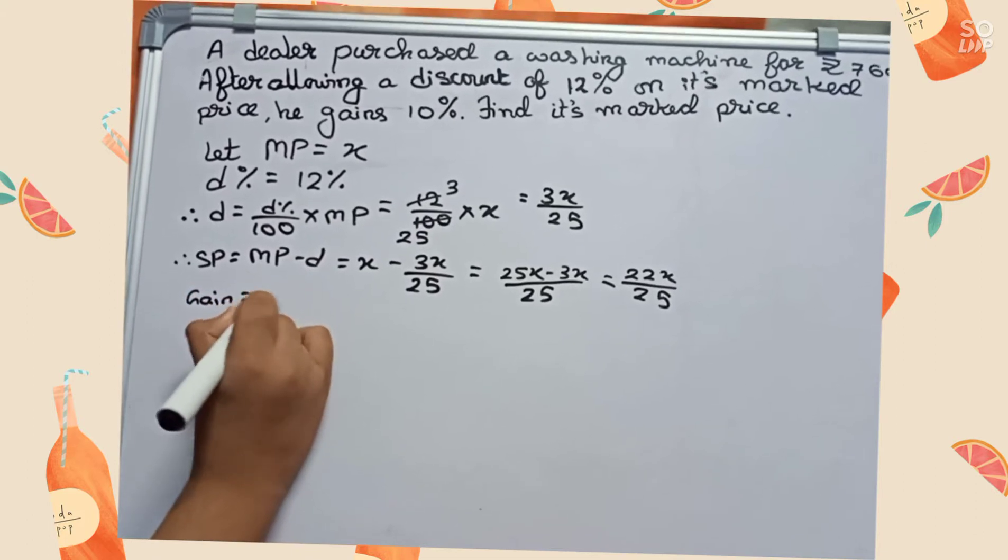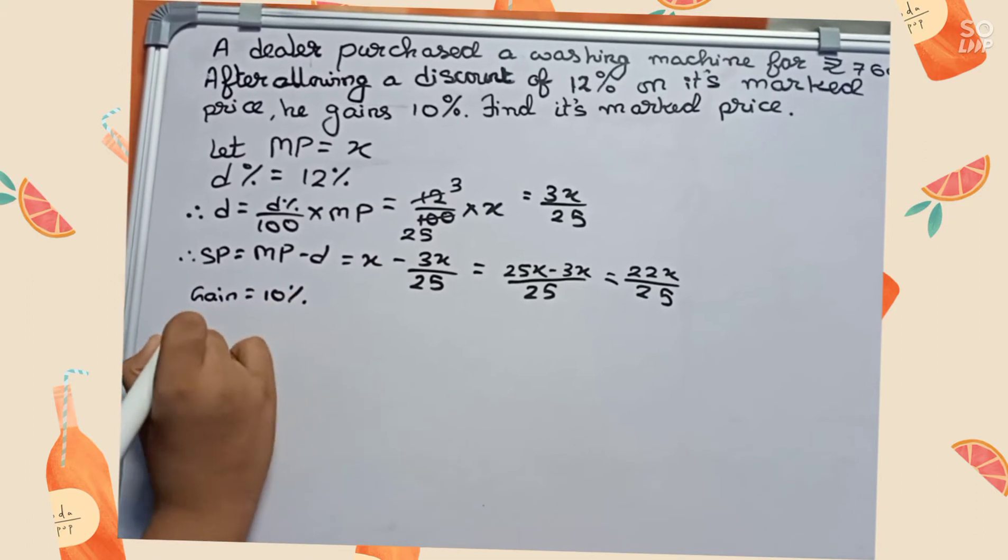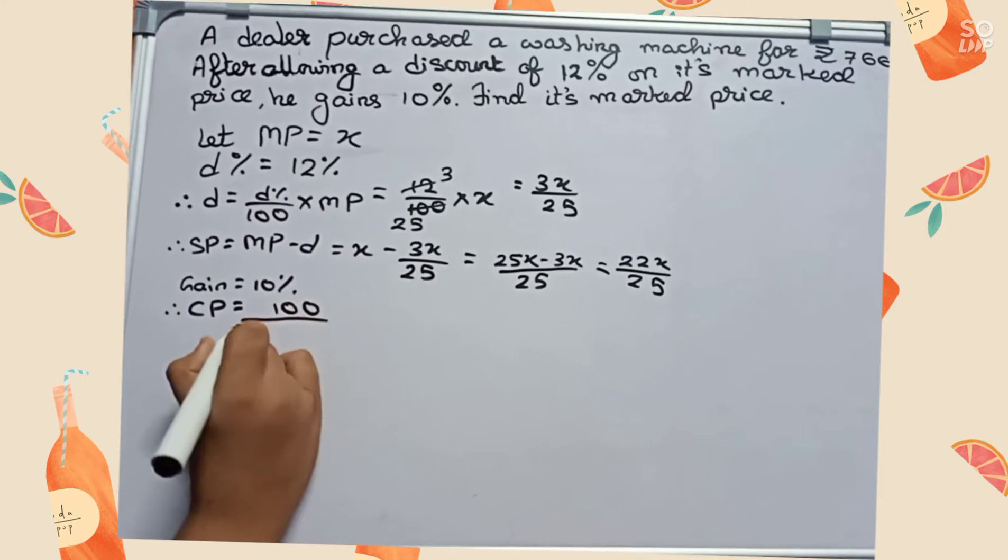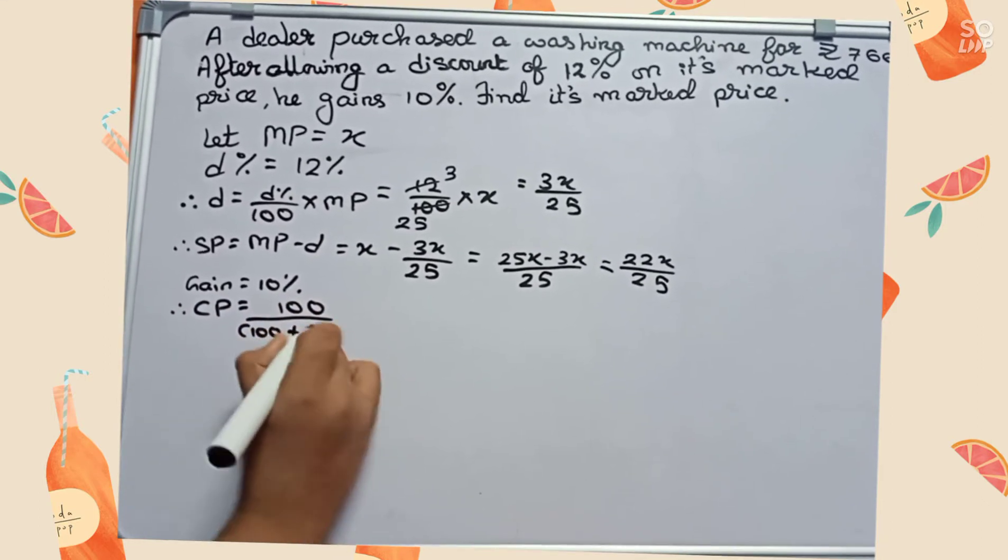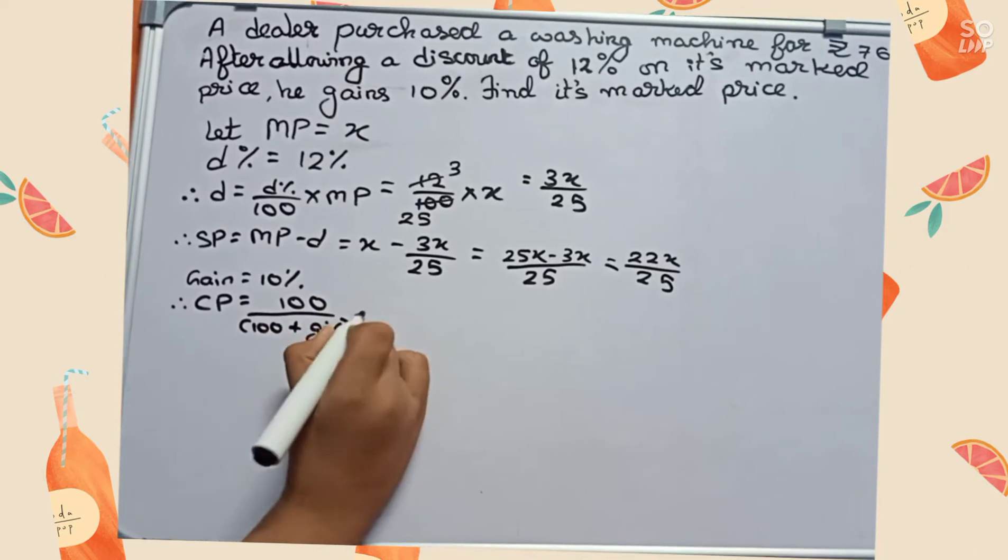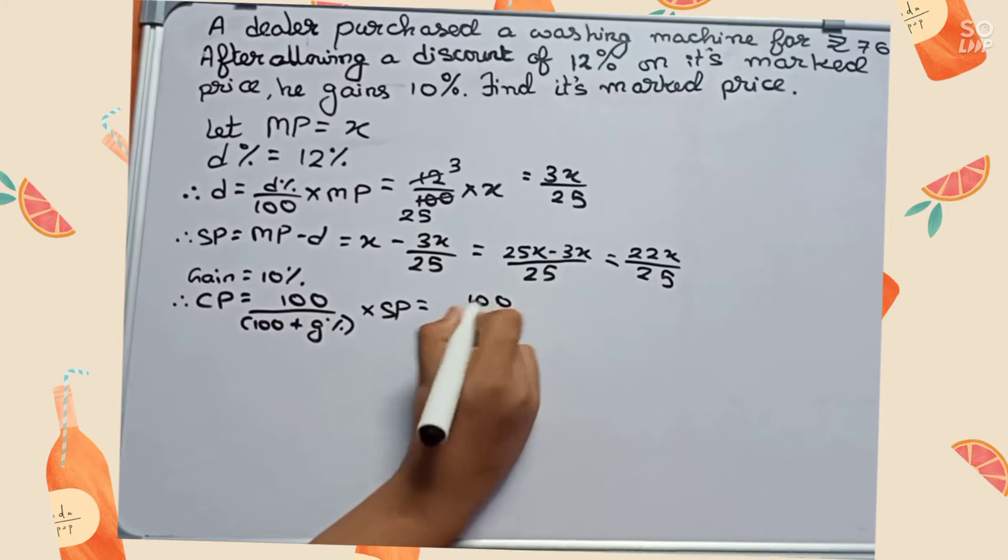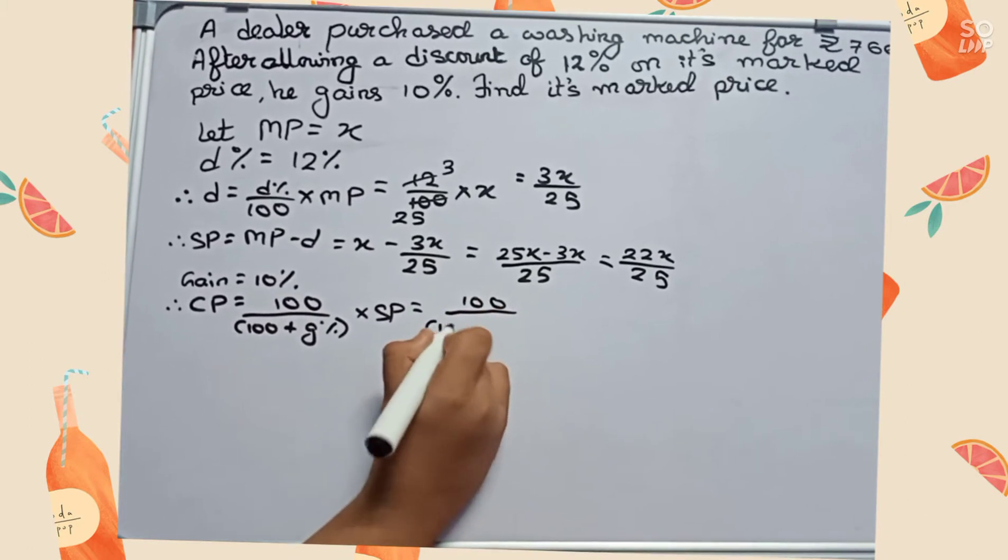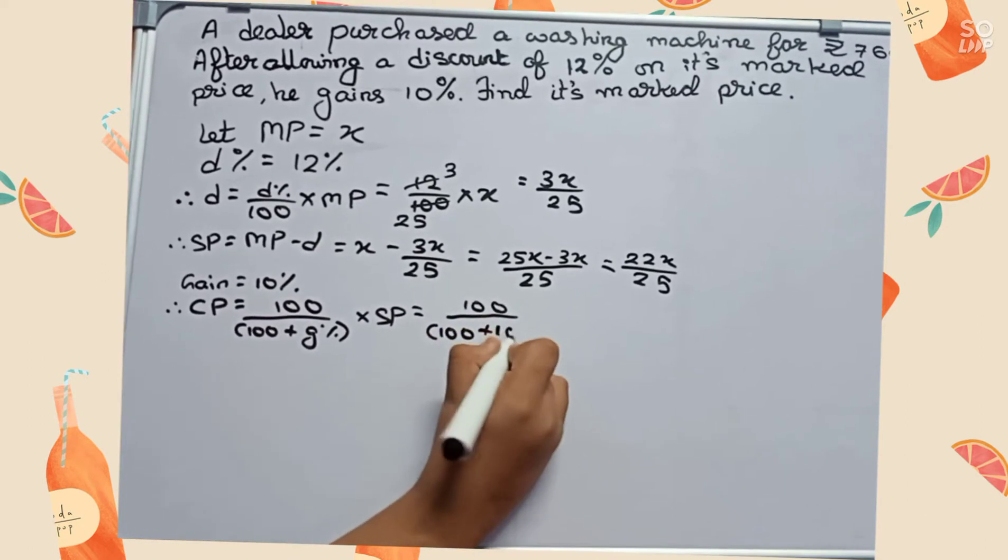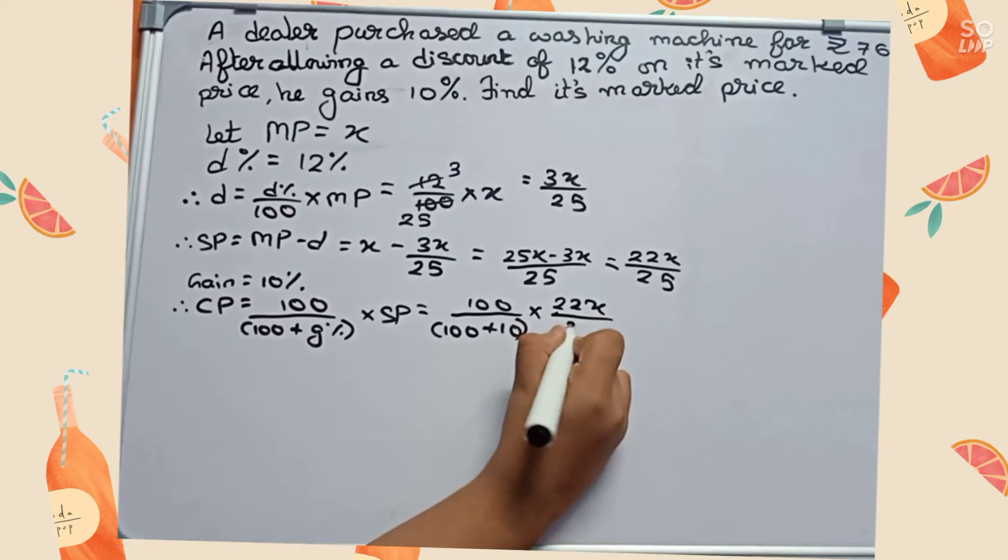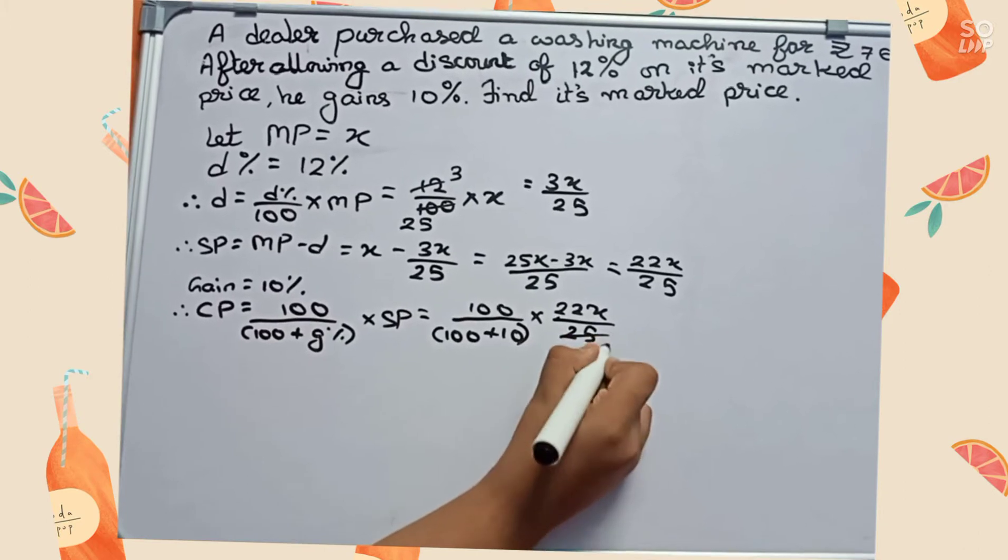Now we will find CP. Therefore, CP - the formula is 100 by 100 plus gain percentage into SP, which equals 100 by 100 plus 10 into 22x by 25. We cut 25 and 100, one by 4, so it will become 4 by 110 into 22x.